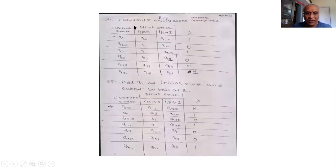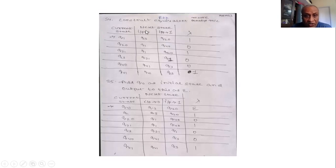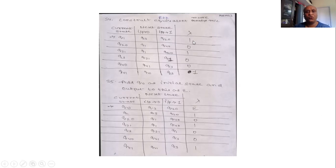Now we construct the equivalent Moore machine. The states are Q1, Q2-0, Q2-1, Q3, Q4-0, and Q4-1. There are two inputs, 0 and 1, and for these inputs we have different next states taken from the previous table. We have separated out Lambda (the output function): Q1 output is 1, Q2-0 output is 0, Q2-1 output is 1, Q3 output is 0, Q4-0 output is 0, and Q4-1 output is 1.